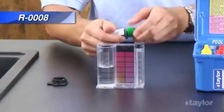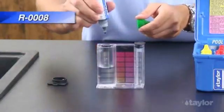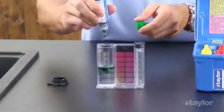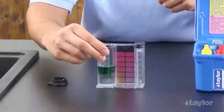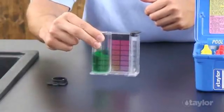Add five drops of reagent 8. Swirl to mix. The sample should turn green.